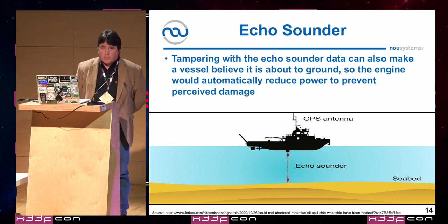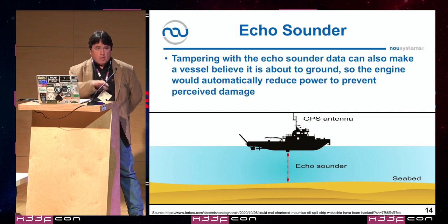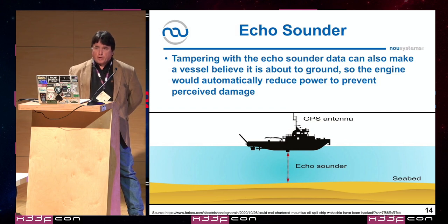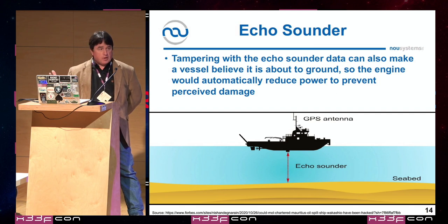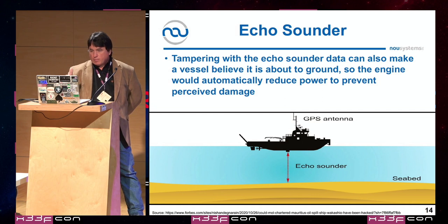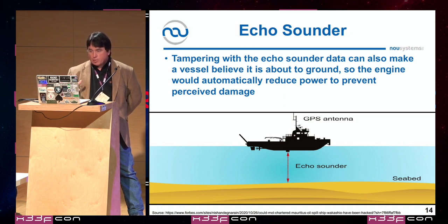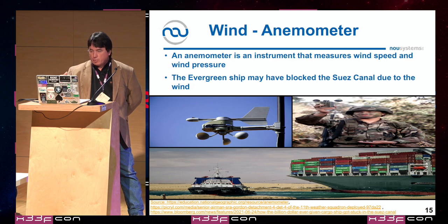Another physics-based source to consider, going back to ships, is the echo sounder — it tells the ship how deep the water is and whether they're about to run aground on a sandbar or reef. There's an example of a ship that was off course for four days until it ran up on a pristine reef, with navigation maps not showing where they really were and the echo sounder not warning them of shallow water. Someone may have been messing with the navigation system.